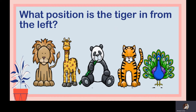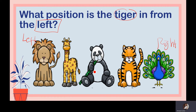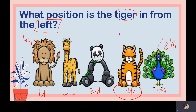Let's try another example. What position is the tiger in from the left? First, identify which side is left and which is right. Counting from the left: first animal, second animal, third, fourth, and fifth. The question asks for the tiger's position, which is fourth. Remember to read the question first, understand it, and find the point of reference before you answer.